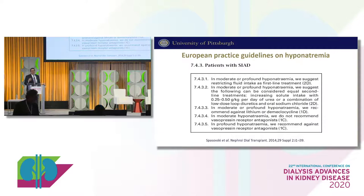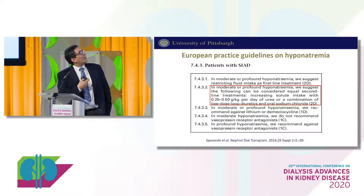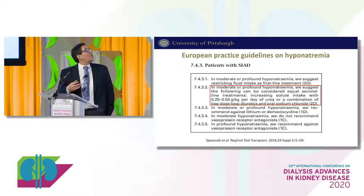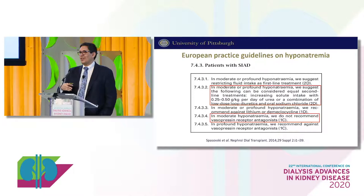The 2014 European guidelines recommend urea as a second-line therapy for moderate to profound hyponatremia from SIADH after fluid restriction, alongside the combination of loop diuretics with salt tablets, and actually recommend against the use of vaptans. This contrasts with the 2013 American guidelines, which do recommend vaptans. Europeans and Americans didn't necessarily agree based on the data available.